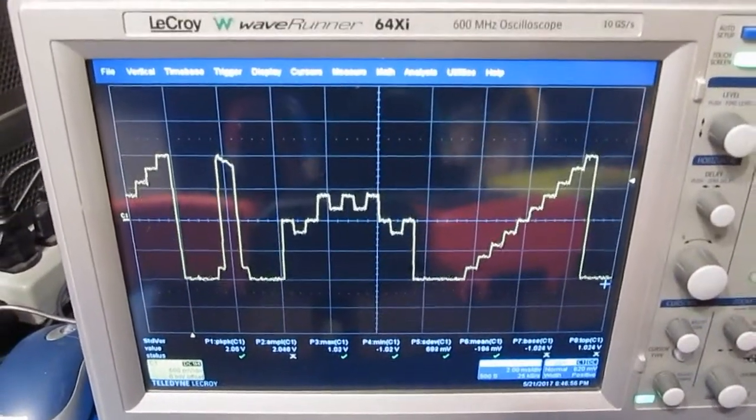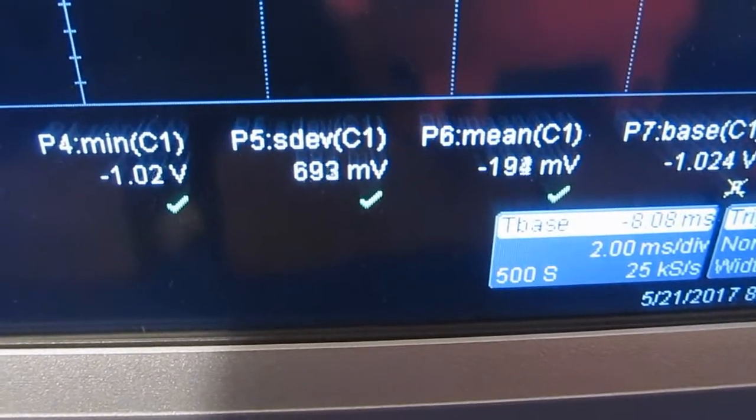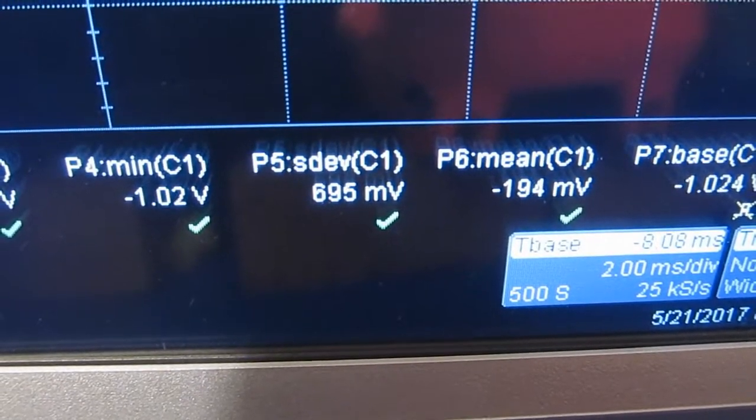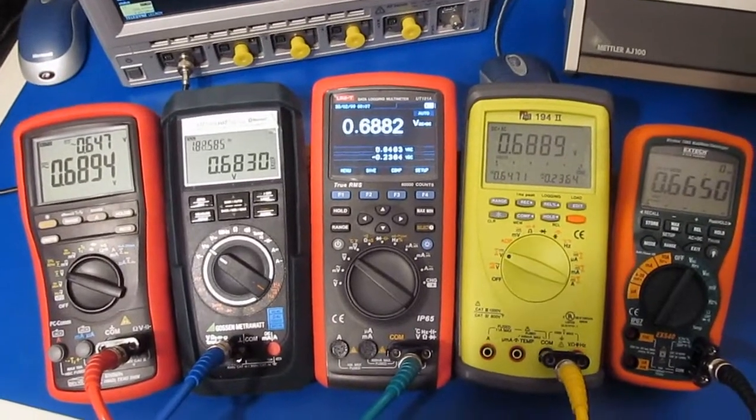You can see it has a standard deviation of 695 millivolts. Currently all five meters are set to their AC plus DC values.